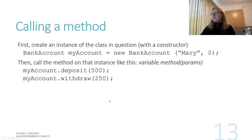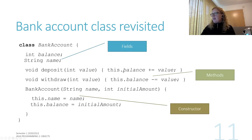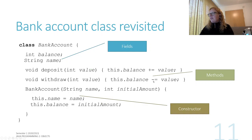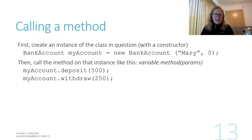So if you have an object and you want to call methods on it, first you need to create an instance of the class. Here we say BankAccount myAccount, and then we create a new object of that type using the constructor. Now myAccount is a bank account object. Then if we want to call methods on it, you say the variable name and a dot, then you call the method name with its parameters. So in this case, if we want to deposit 500 pounds into this account, we would say myAccount.deposit(500) — and that would call the deposit method with the value 500 and add 500 to the balance. Then if we call myAccount.withdraw(250) on this exact object, it would call the withdraw method and subtract 250 from the balance. That's the basics of object-oriented programming: what is an object, what is a class, how do you define a class in Java, how do you create an object of that class, and how do you do stuff with it.